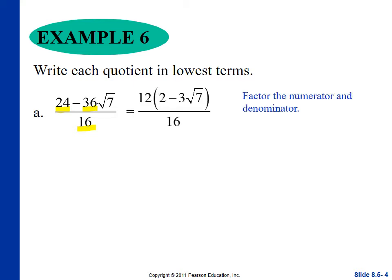So, the greatest common factor between 24 and 36 is 12, and then you have 16 on the bottom there. So, my methodology is a little bit different, so we'll talk this through in a moment.